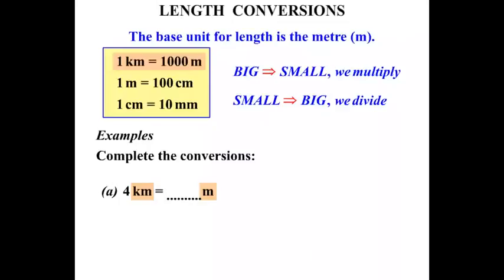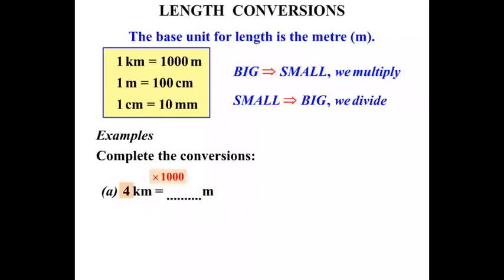We need to work out whether we times or divide by that thousand. We're changing from kilometers to meters — that's changing from something big to something smaller, so we multiply by a thousand. And four times a thousand is four thousand.